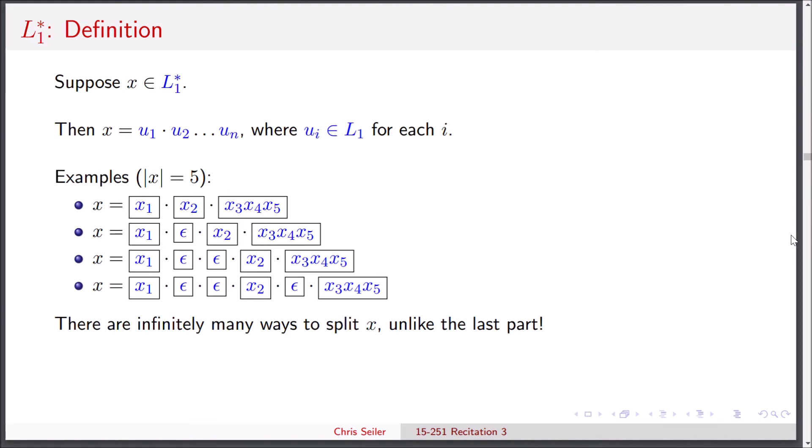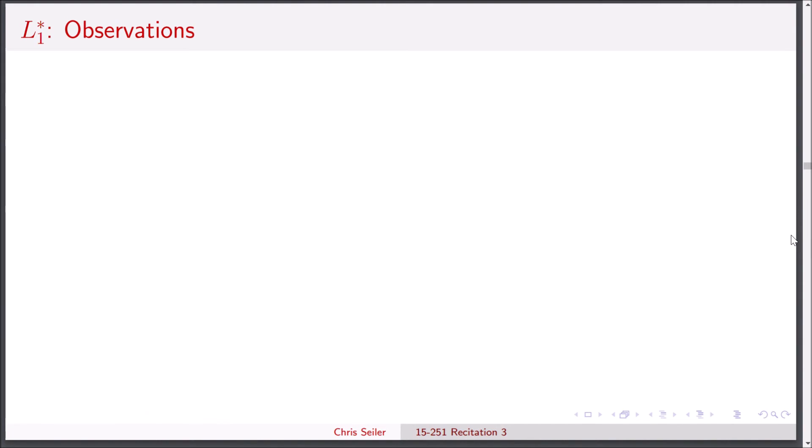Let's see what happens when we have epsilon as one of these substrings. If we have epsilon as a substring, then we have u1, u2, up through ui minus 1, then the epsilon, and then the rest of the u's. And then we say this is in L1 star. But we can also just remove this epsilon, and then we have a finite concatenation of u's which still form the same string x. So in fact, whenever x is non-empty, we don't have to consider epsilon as a substring.